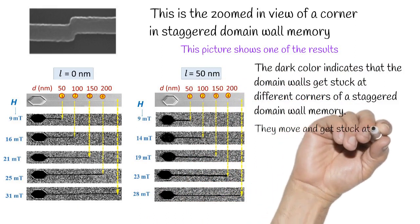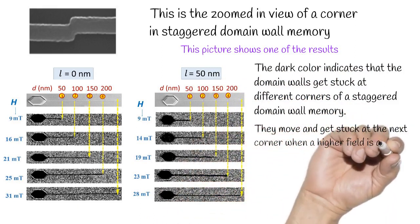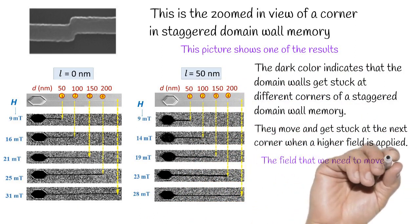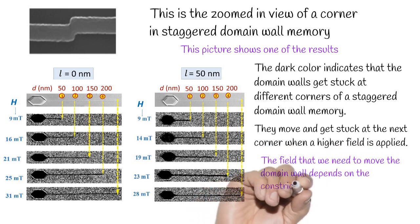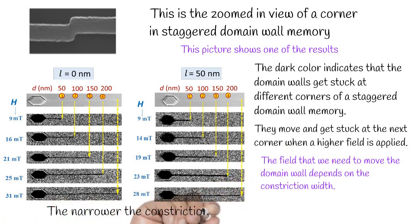They move and get stuck at the next corner when a higher field is applied. The field that we need to move the domain wall depends on the constriction width. The narrower the constriction, the stronger the pinning.